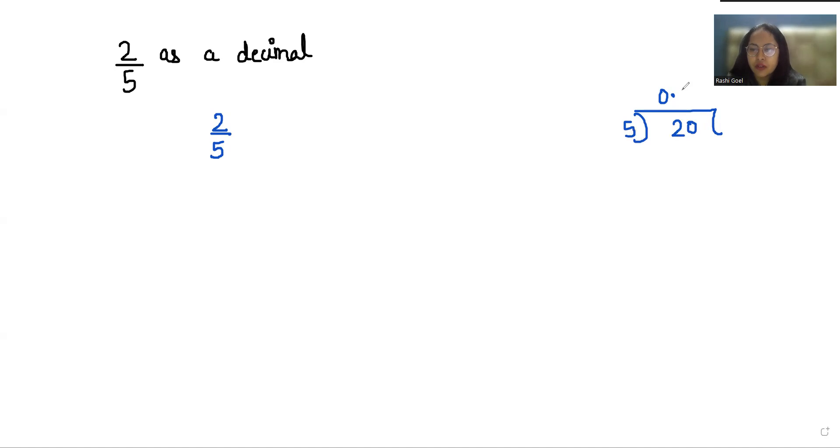5, 20 comes at 4 place. So it's 0.4. There is an alternate method as well. So write 2 by